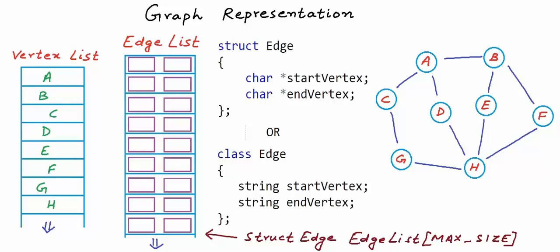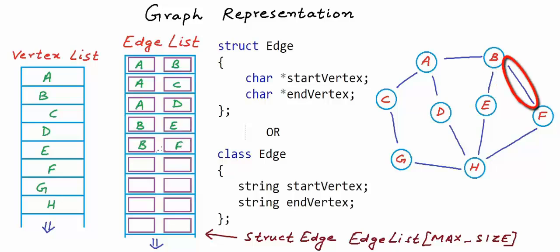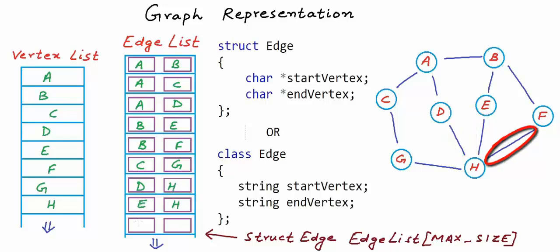Let's fill in this edge list for the example graph. Each row has two boxes — the first to store the start vertex and the second to store the end vertex. We have edges between A-B, A-C, A-D, B-E, B-F, C-G, D-H, E-H, and F-H.